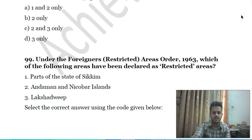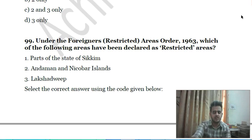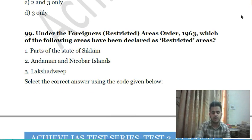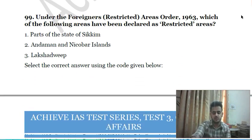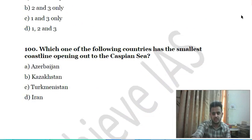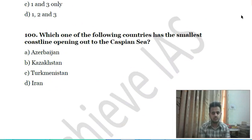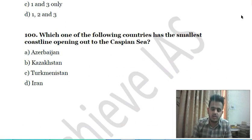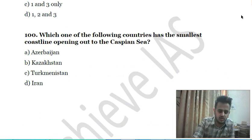Ninety-eighth question: under the Foreigners (Restricted Areas) Order 1963, which of the following areas have been declared as restricted areas? First, parts of the state of Sikkim; second, Andaman and Nicobar Islands; third, Lakshadweep. Choose the correct answer. This is the last question of the day.